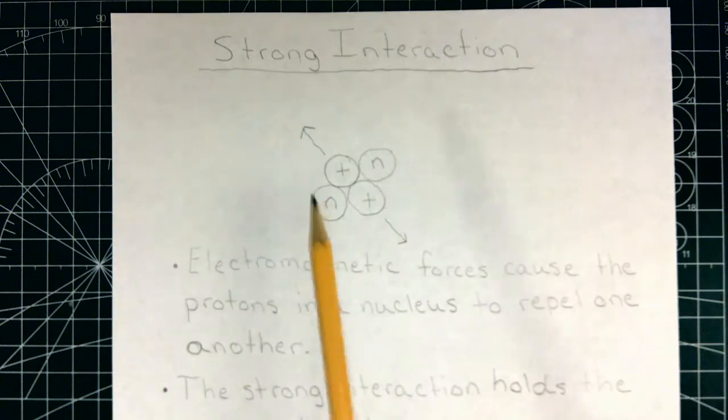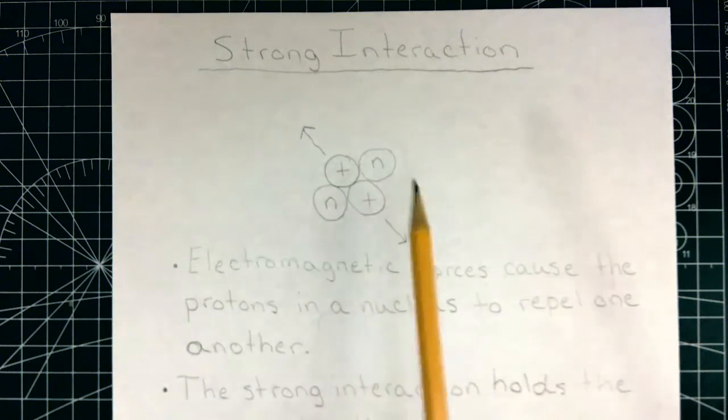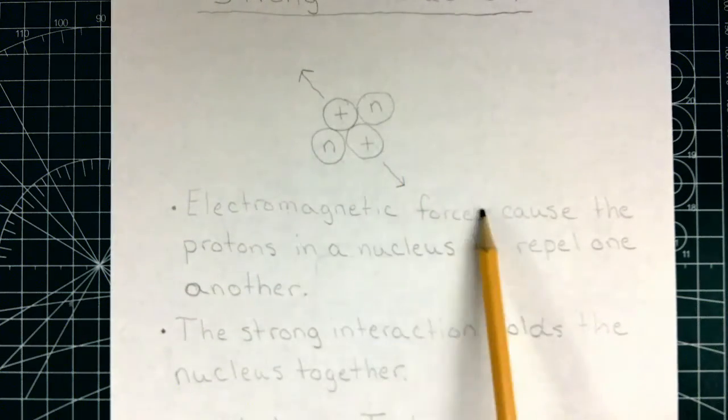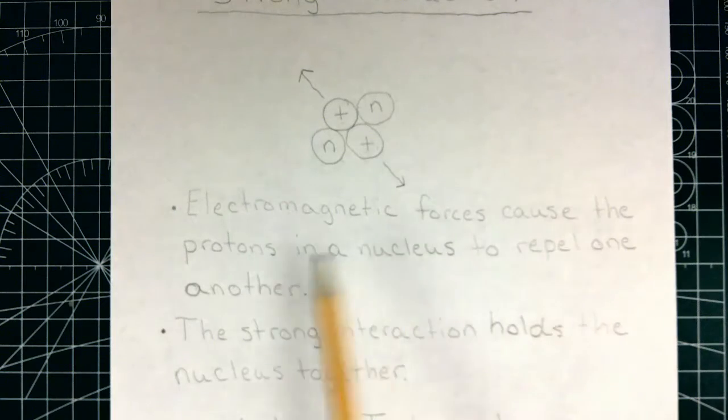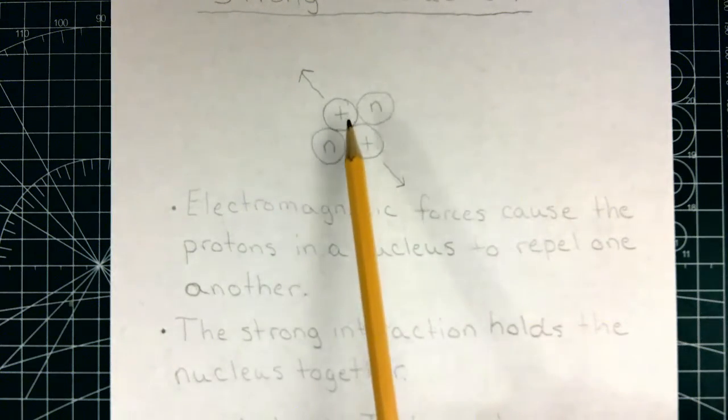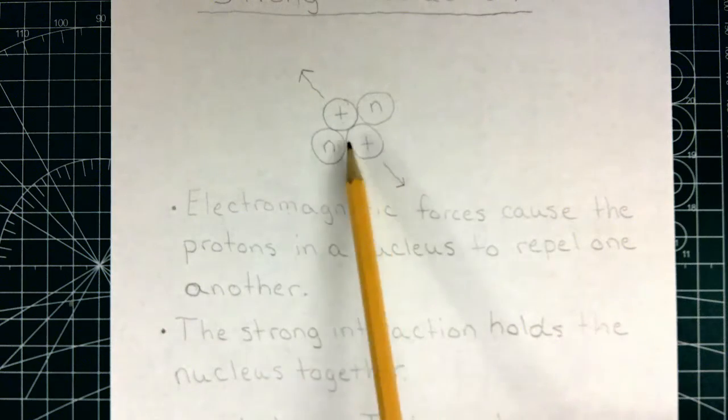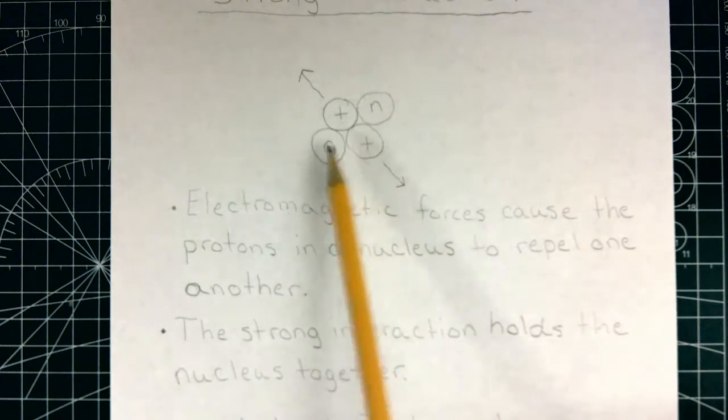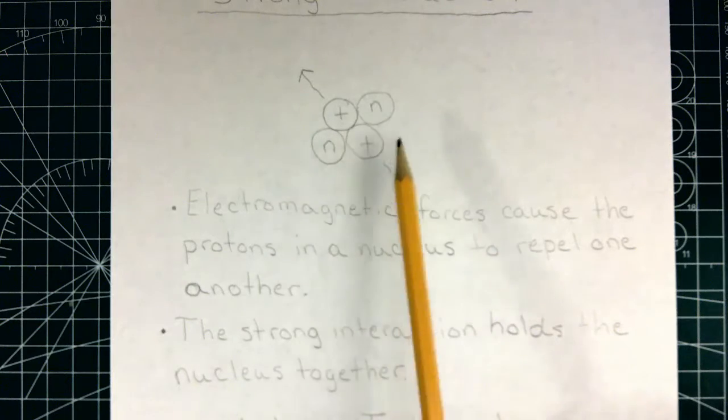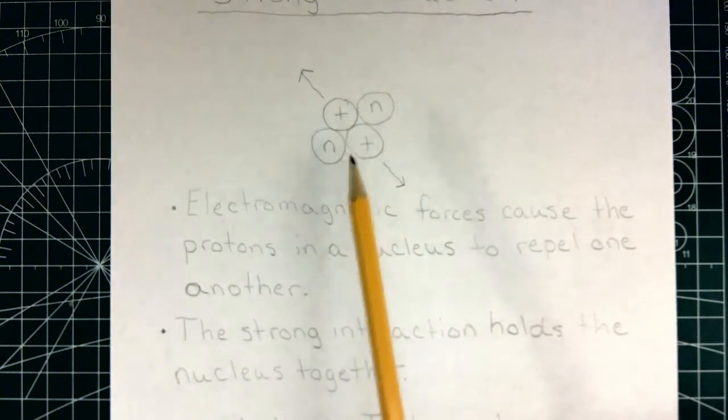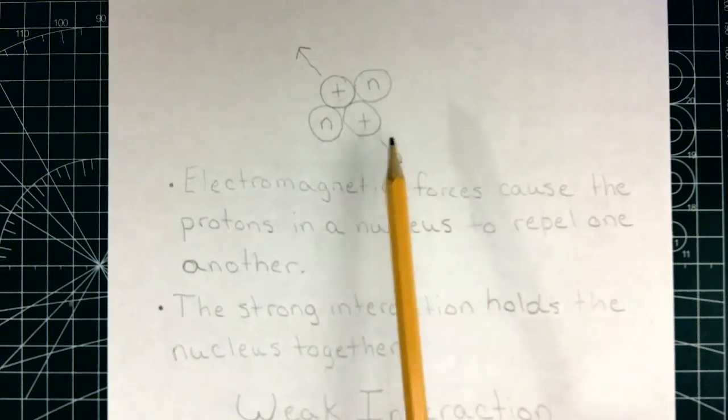The strong interaction is responsible for holding the nucleus together. Electromagnetic forces cause the protons in a nucleus to repel one another. If you've ever tried to hold the positive end of one magnet to the positive end of another magnet, you'll know that they repel each other. Those forces are at play inside a nucleus as well. Something is holding this all together, and that is the strong interaction.